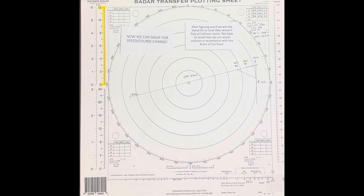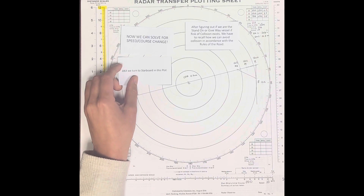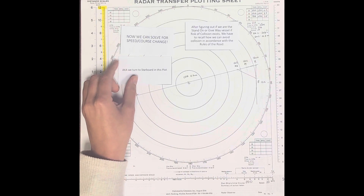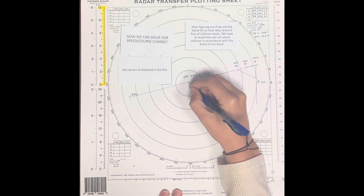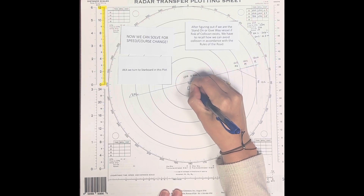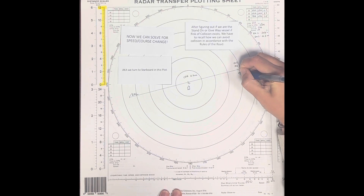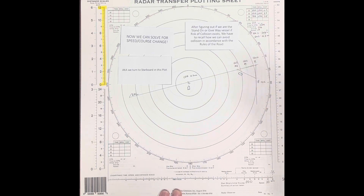After figuring out if we are the stand-on or give-way vessel and if a risk of collision exists, we now have to recall how we can avoid collision in accordance with the rules of the road. In this plot, we are going to turn to starboard. Don't forget to draw your little boats on the actual plot to help you figure out which rules apply.